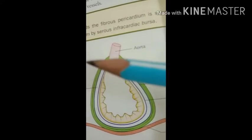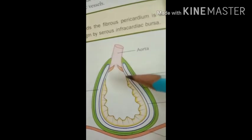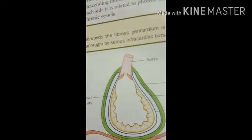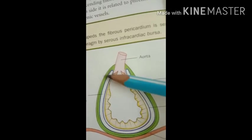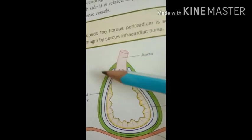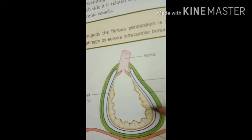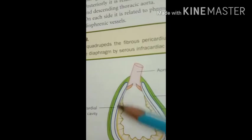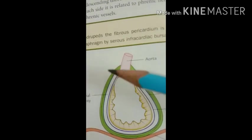These two layers are continuous with each other at the root of the great vessels — namely the ascending aorta, the pulmonary trunk, the two venae cavae, and the four pulmonary veins. The pericardial cavity is a potential space between the parietal and visceral (epicardial) layers, containing a thin film of serous fluid. This fluid avoids friction between the two layers so the heart can beat smoothly.